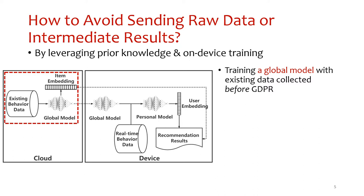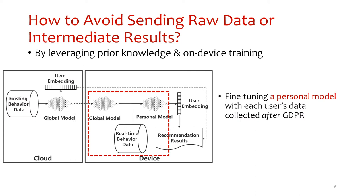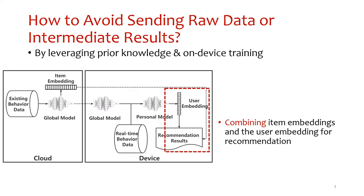First, we train a GRU-based global recommendation module with existing interaction behavior data of all users collected before GDPR on the cloud. Then, each user fine-tunes a personal module on her own device and extracts a unique user-specific embedding from her personal module. Third, we combine the latest information of the user embedding and item embedding to complete the recommendation process.